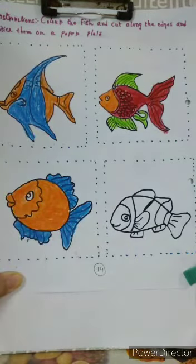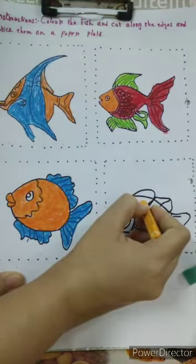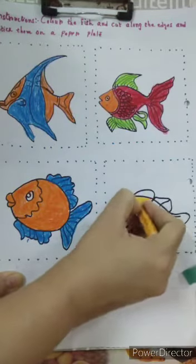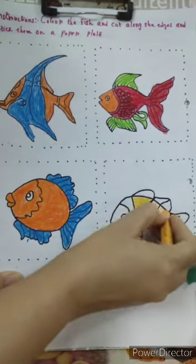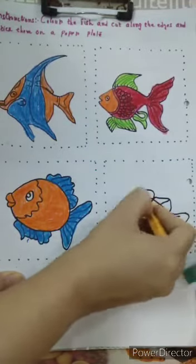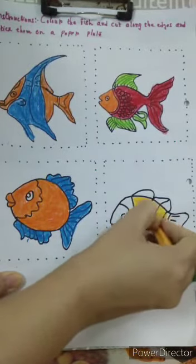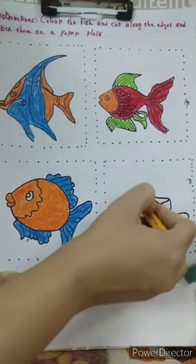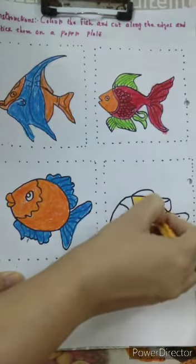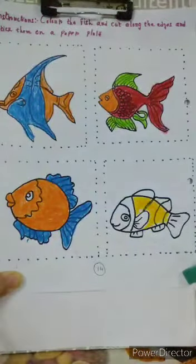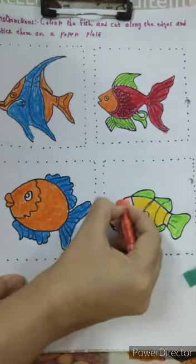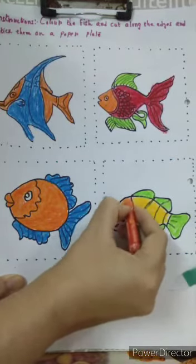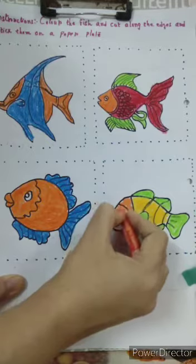Now, next, the last one. Let us color with yellow color, right? This is yellow color. Fish stays in water, right? Yes, we have completed our coloring.